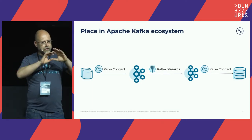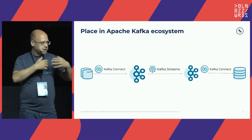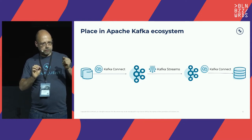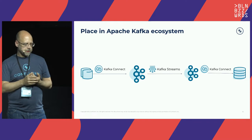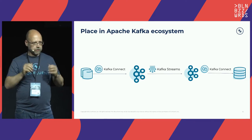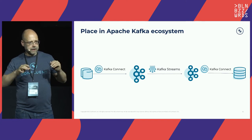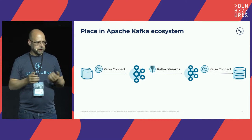Kafka Streams fits between the producer/consumer and ksqlDB, where we use an SQL-like dialect to write stream processing applications. You could say it's at a similar level of abstraction to Kafka Connect, which is a framework allowing us to run connectors to interface with external data systems — getting data in and out of Kafka. Debezium is an example. In a modern Kafka-based ETL pipeline, we use Kafka connectors to get data in and out, and Kafka Streams to transform data from one Kafka topic to another. Kafka Streams is not meant to interface with external systems directly — doing so is almost an anti-pattern.